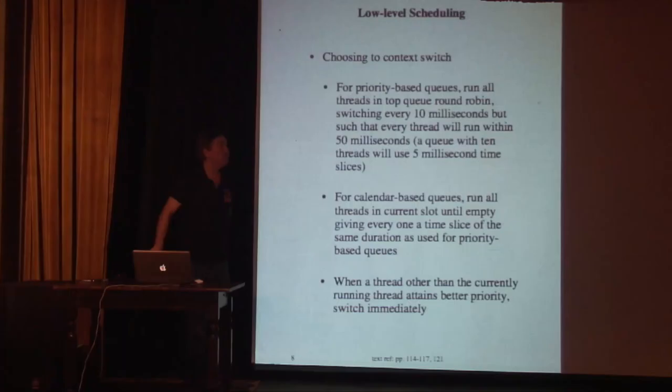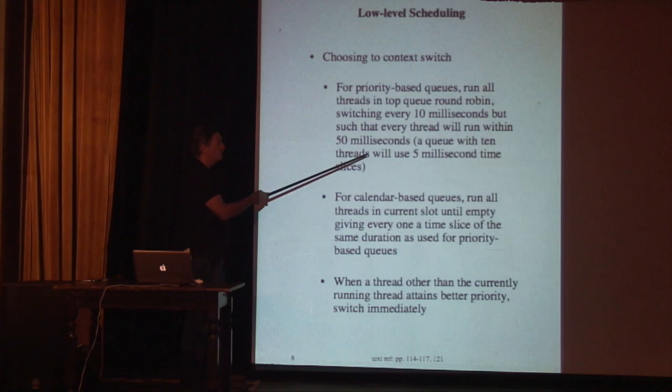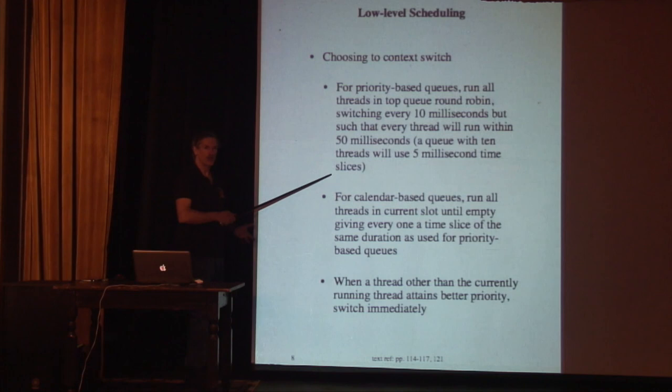Now let's look at how the low-level scheduling actually works. For priority-based queues, we run all threads in the top queue, giving each 10 milliseconds, but ensuring every thread runs within 50 milliseconds. A queue with 10 threads uses a 5-millisecond time slice. We have a lower limit so that if the slice would be less than 5 milliseconds, we just give 5 milliseconds so things can spread out. Generally we don't hit that limit. The key concern is avoiding too much churn, since context switches have a cost in reloading caches.